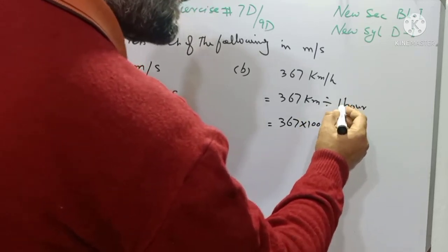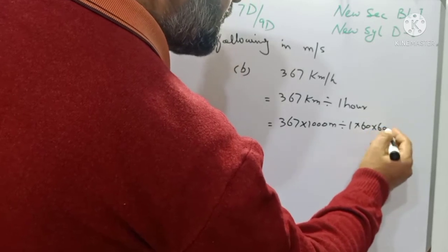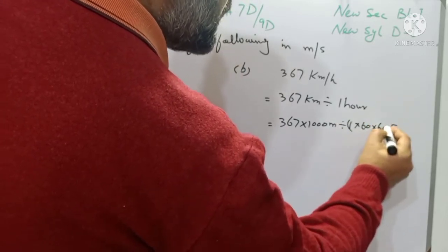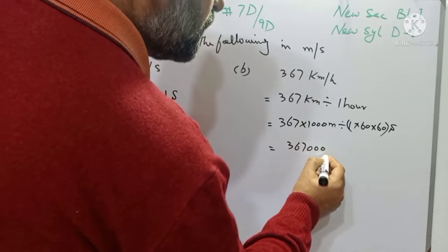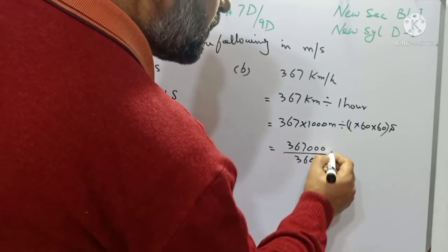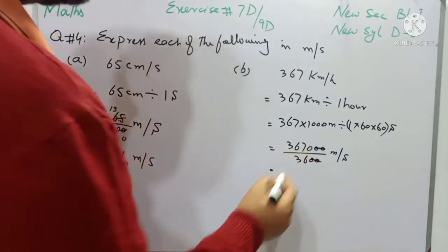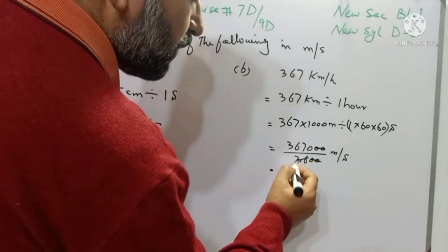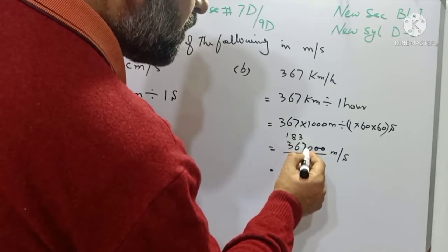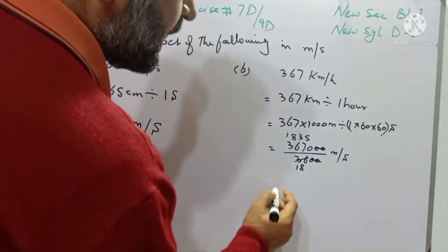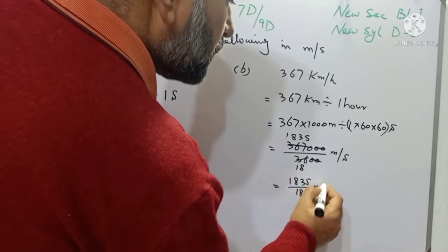We have to convert hours into seconds, so it is written as 1 multiplied by 60 multiplied by 60 seconds. It will become 367,000 divided by 3600, and the unit is meter per second. The last 2 zeros will be cancelled with last 2 zeros. We will then cancel denominator and numerator with the table of 2, giving us 1835 divided by 18 meter per second.